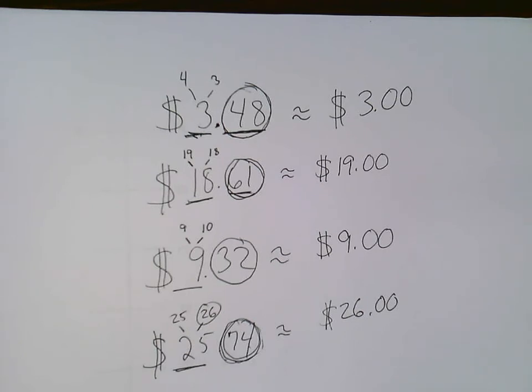So remember, underline the dollar amount, circle the coin amount. The dollar amount will either stay the same or go up one. If the circled amount is more than 50 cents, the dollar amount will go up. If the circled amount is less than 50 cents, the dollar amount will stay the same.